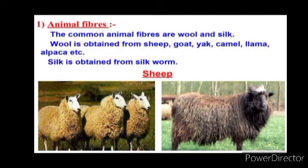Wool is obtained from sheep, goat, yak, camel, llama, alpaca, etc. And silk is obtained from silkworm.